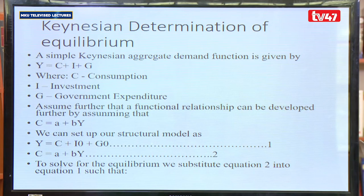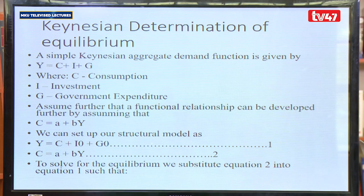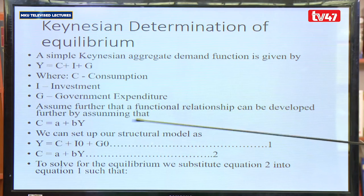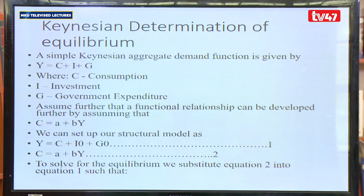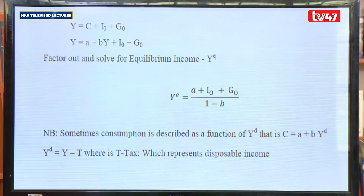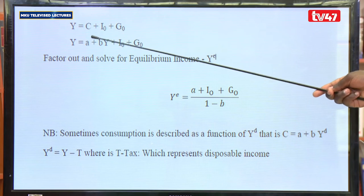If we come up with these two equations — where we assume a function relationship — we say that since Y equals C plus I plus G, and C is a function of income where C equals A plus BY, we can develop: equation one: Y equals C plus I plus G, and equation two: C equals A plus BY. To solve for the equilibrium, we substitute equation two into equation one, replacing C with A plus BY.